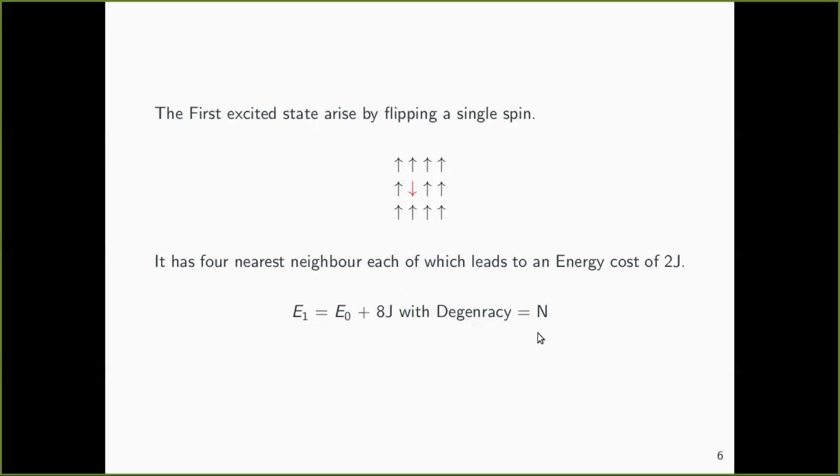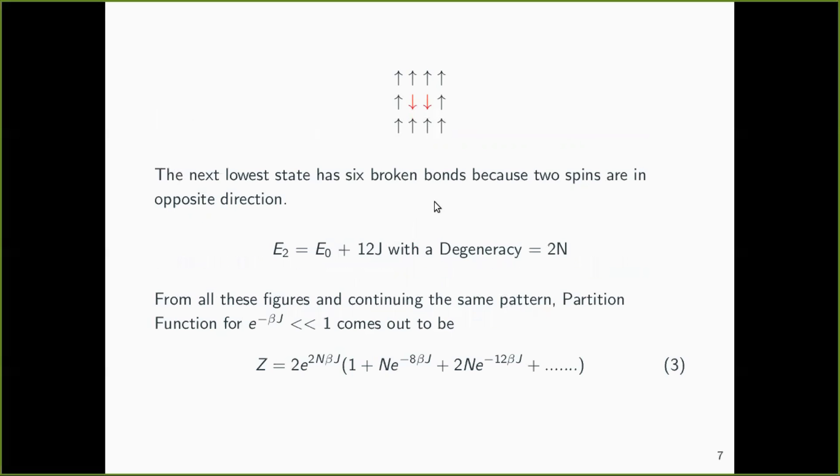Now when we say the second excited state, it will be when two spins are down. Now they are interacting with six neighboring lattice sites. So the energy cost will be 12J and you get it in this E0 plus 12J with a degeneracy.